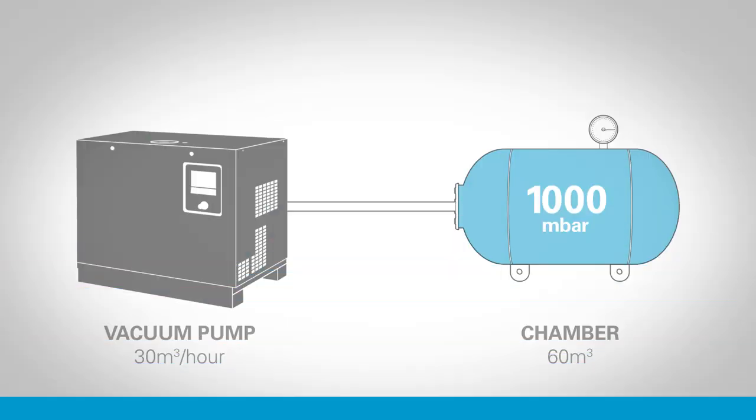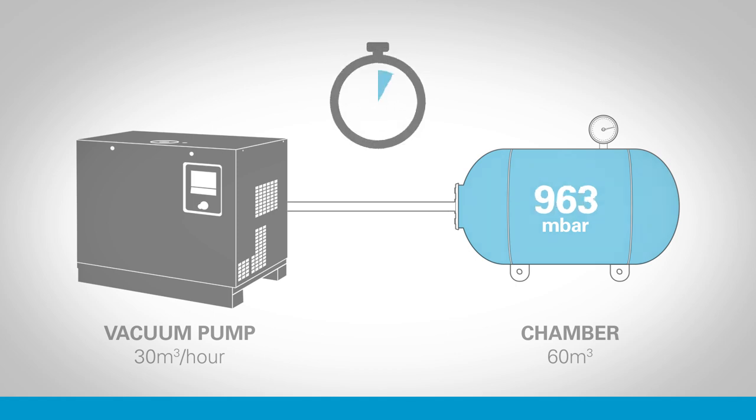Let's try to bring that back to pumps. Imagine a 30 meter cubed per hour vacuum pump working in a single stroke each hour on a 60 meter cubed chamber held at 1000 millibar. In the first hour it will remove half of the gas in the vessel and the pressure will be reduced to 50%, or 500 millibar.